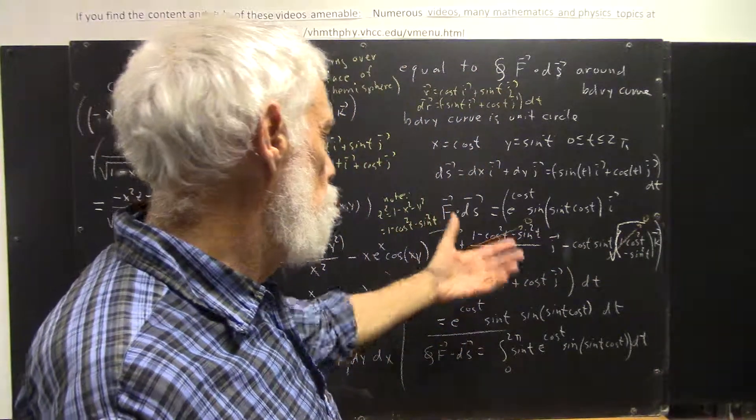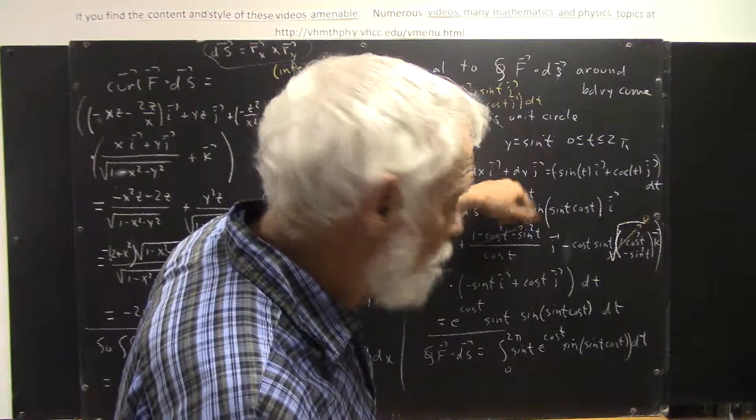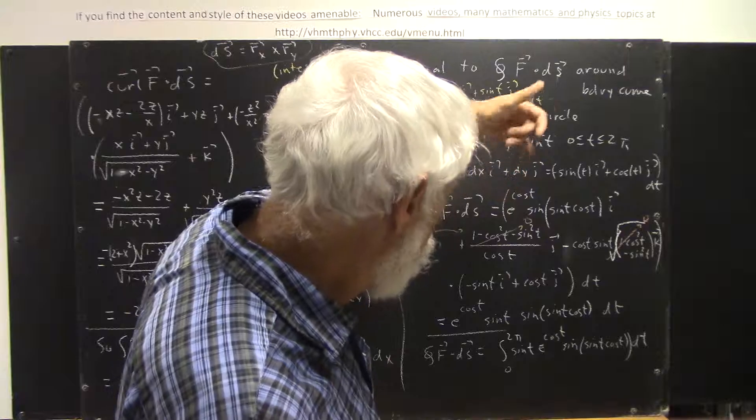And then you take your xyz, cosine t times sine t times the square root of 1 minus, etc. And you have this.